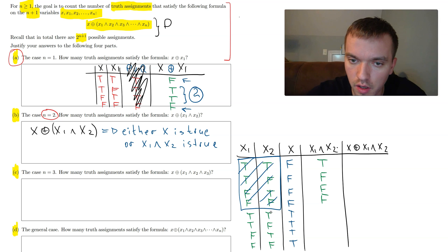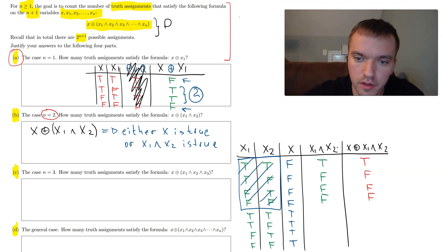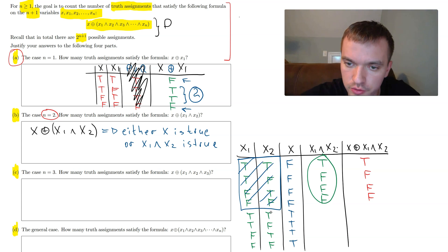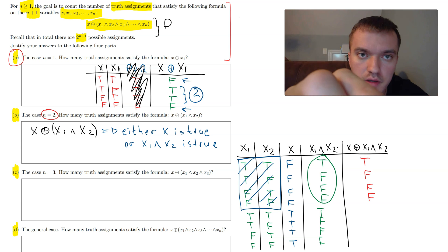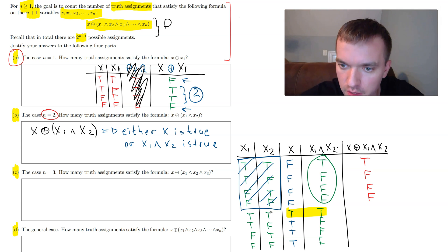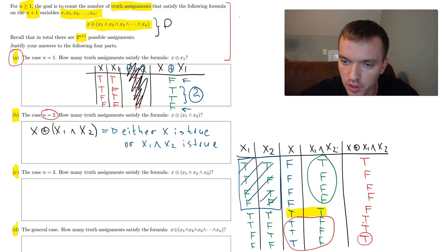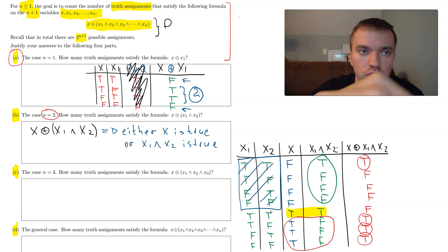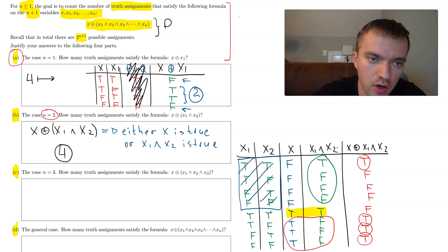For the first four rows (X = false), the only true outcome for X XOR (X1 AND X2) comes from the first row where X1 AND X2 is true. For the second four rows (X = true), X1 AND X2 is false in three cases, giving three more true outcomes. Counting all true rows: 1 + 3 = 4. So for Part B, the answer is 4 truth assignments.